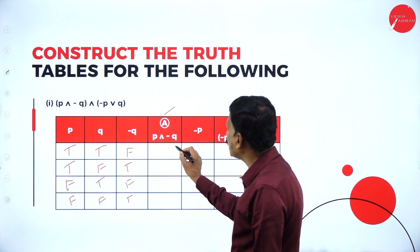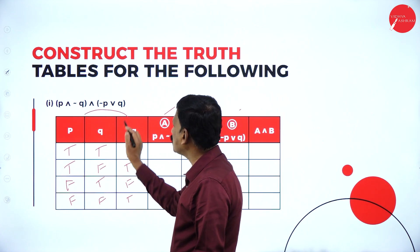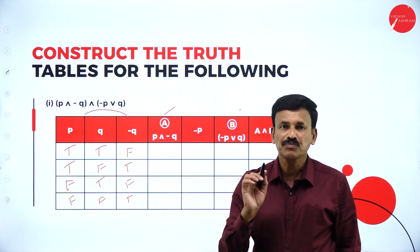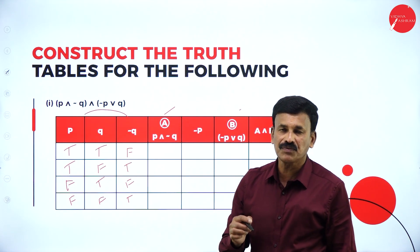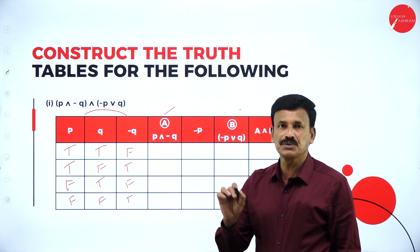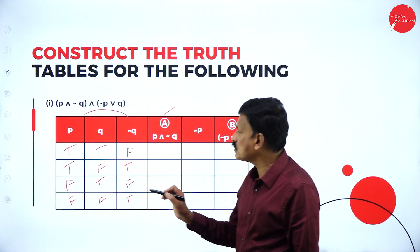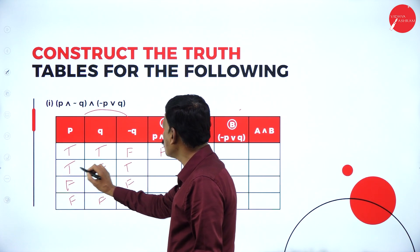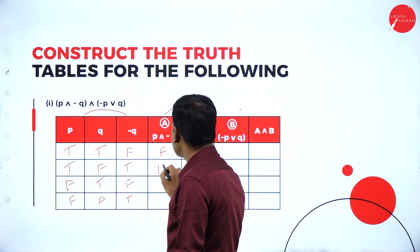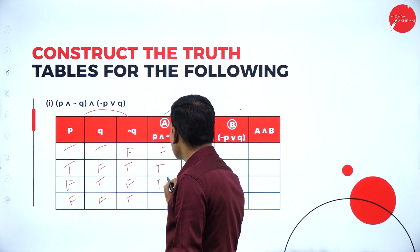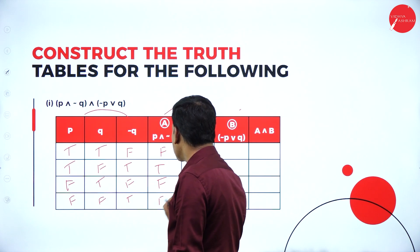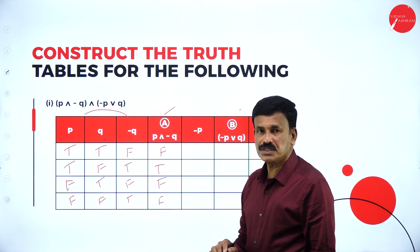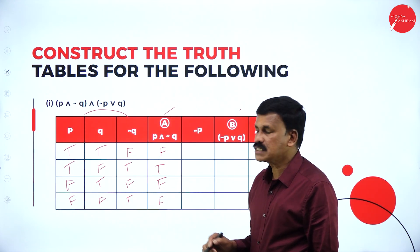These two — P and negation Q — are connected by conjunction. For conjunction, true and true is true; in all other cases it is false. So: true and false is false, true and true is true, false and false is also false, false and true is also false. In conjunction, only true and true is true.